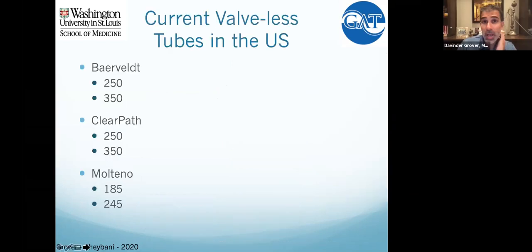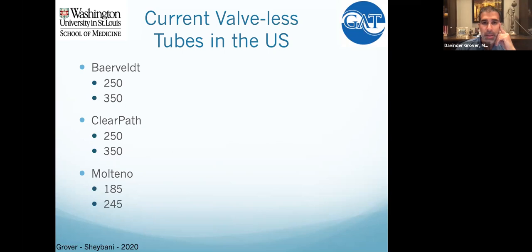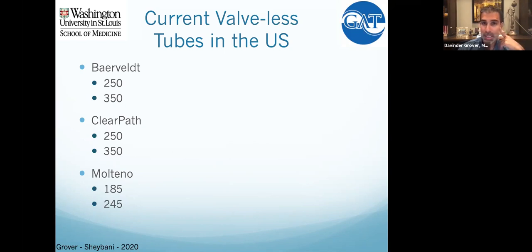Back in the day when tubes first came out in the 80s, they were really for extremely refractory eyes that had failed multiple trabs. What Steve Gedde and colleagues have shown with TVT and now PTVT is that we can use tubes earlier in the disease spectrum when it's best for the patient. Post-operative ability to manipulate things is key. I really like tubes in monocular patients — it gives me absolute control.